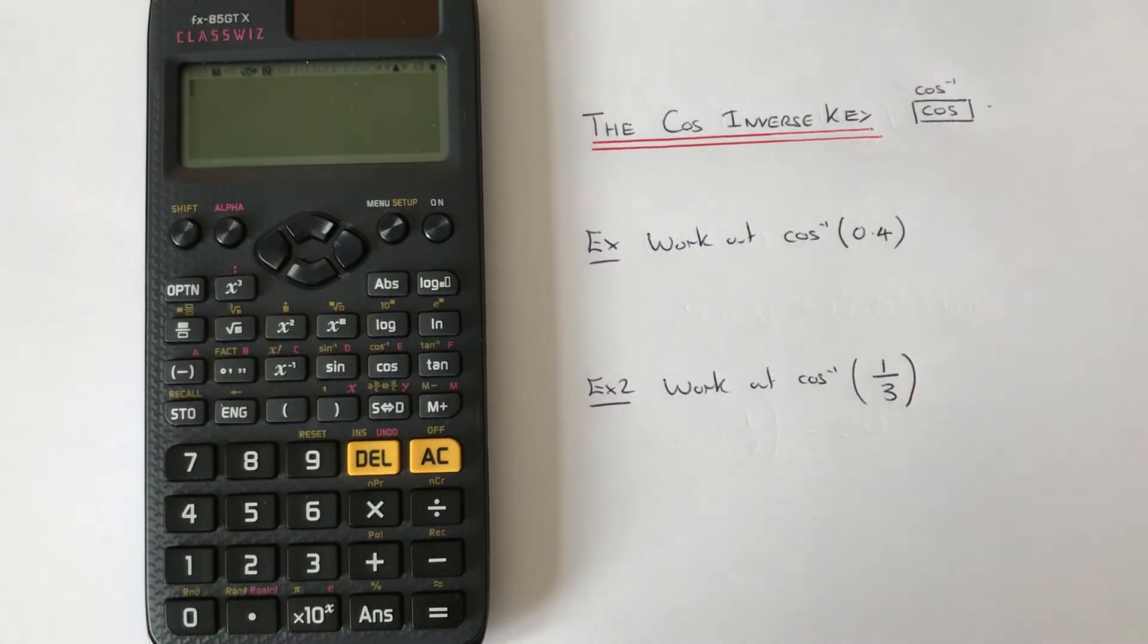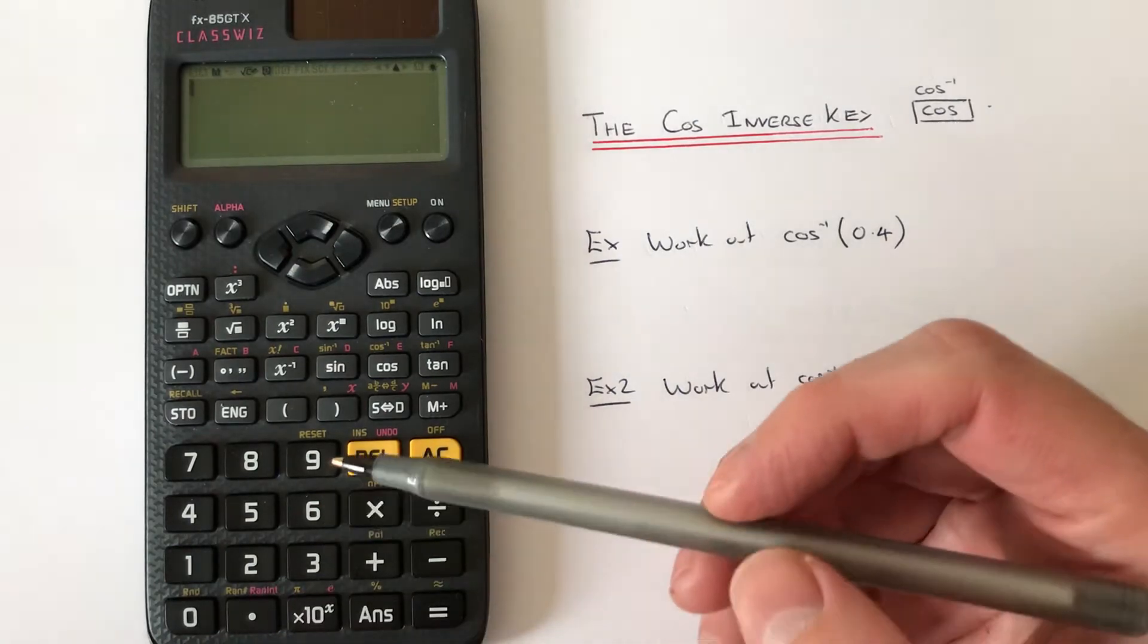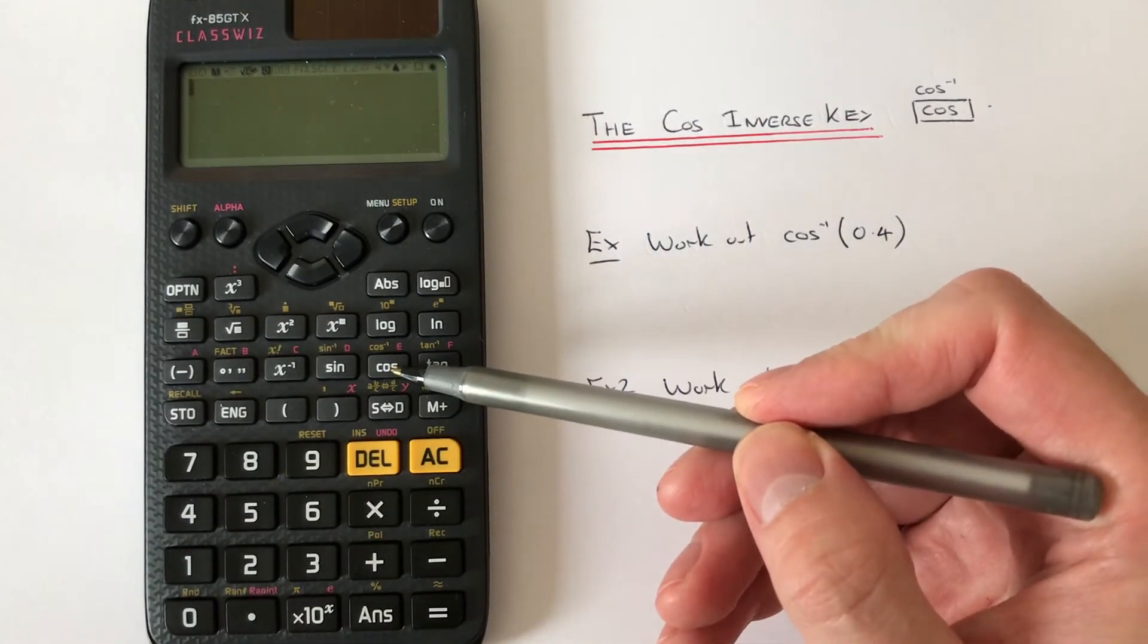Hi guys, welcome back. Today I'm going to show you how to cos inverse a number on a Casio ClassWiz scientific calculator. The cos inverse key can be found on the second function of the cos key.